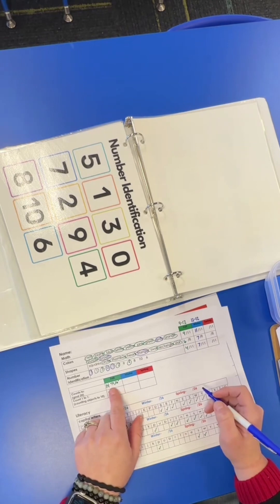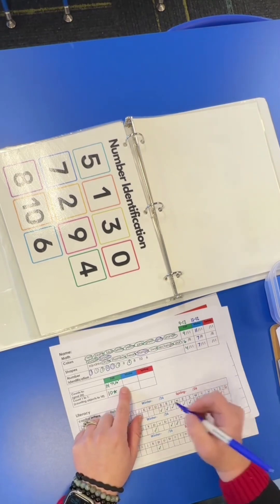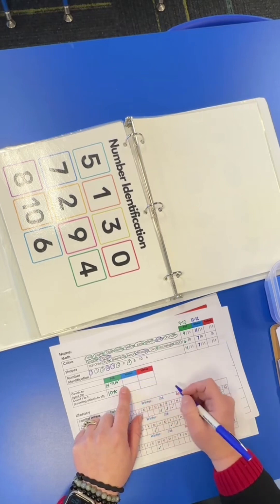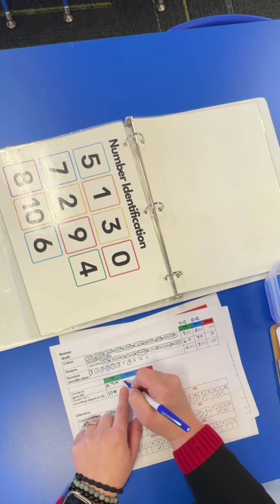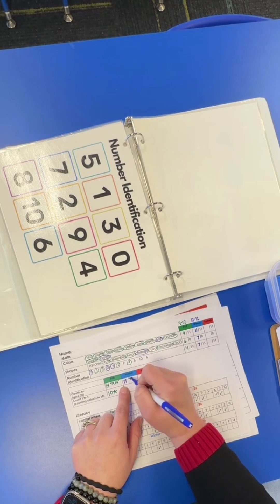When I have the students doing rote counting, I'll ask them to count as high as they can, and when they get to the number where they stop, I'll write that number down, and then I also write in parentheses the two numbers they put together. For instance, 14, 16. This way parents know the number that they skipped when they stopped.